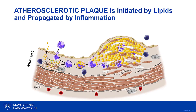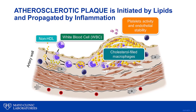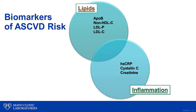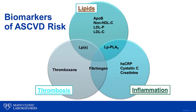The atherosclerotic plaque is a very complex and dynamic structure, initiated by lipids and propagated by inflammation and thrombosis. When we talk about biomarkers of atherosclerotic risk, we talk about biomarkers pertaining to the lipid pathway such as LDL-C, biomarkers pertaining to the inflammation pathway such as high-sensitivity CRP, biomarkers that belong to both, as well as biomarkers pertaining to the thrombosis pathway. Ceramides are central biomarkers that play roles in all three pathways, and they assess atherosclerotic risk more comprehensively than biomarkers pertaining to specific pathways.